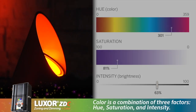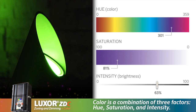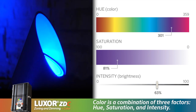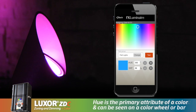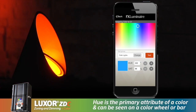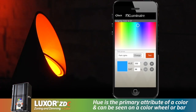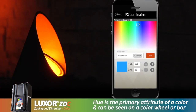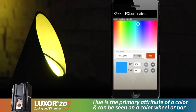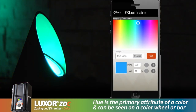First, we need to review the elements of a color. A color is a combination of three factors: hue, saturation, and intensity. Hue is the primary attribute of a color and the full spectrum is typically seen on a color wheel or bar.